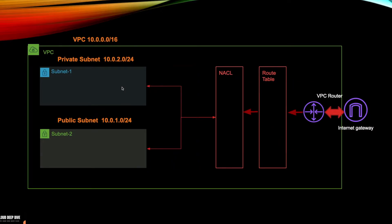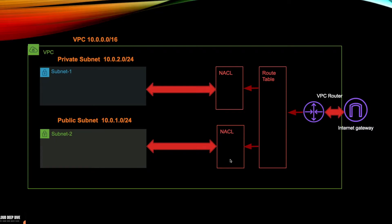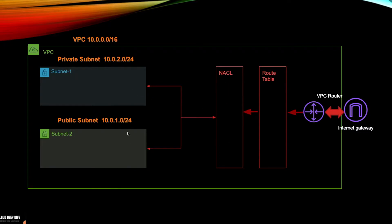Both subnets we created in the VPC will be associated with the default NACL. I can create a new NACL and associate one subnet with a different NACL, since I can have multiple NACLs. One important thing to remember: one subnet can be associated with only one NACL, but one NACL can be associated with more than one subnet. Also, each subnet must be associated with at least one NACL — you cannot have a subnet that is not associated with any NACL.